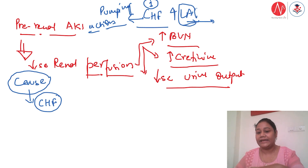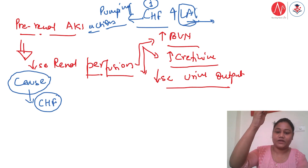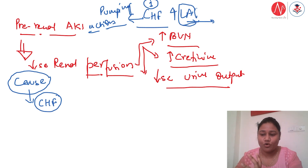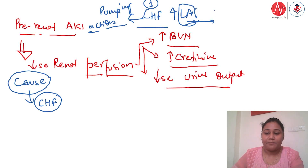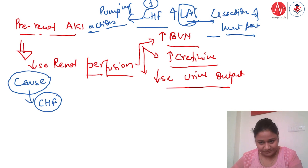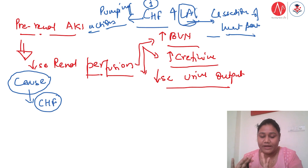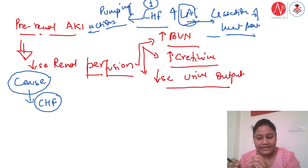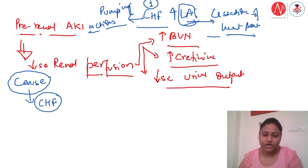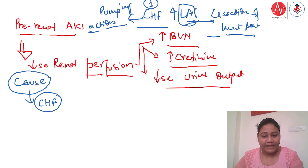In cardiac arrest, the electrical conduction system of the heart — the SA node, AV node — completely stops, resulting in complete cessation of heartbeat. That is cardiac arrest, which is an emergency requiring immediate CPR — cardiopulmonary resuscitation. So congestive heart failure and cardiac arrest are different things.